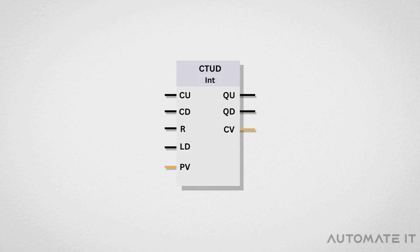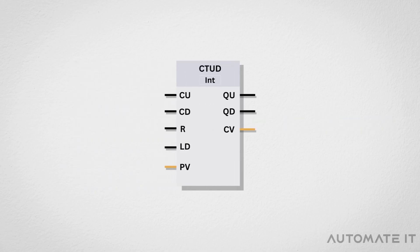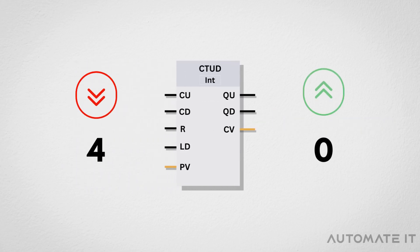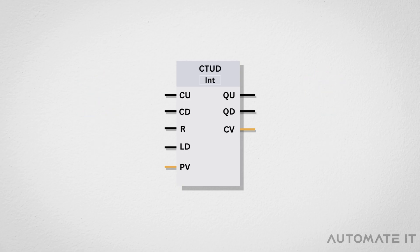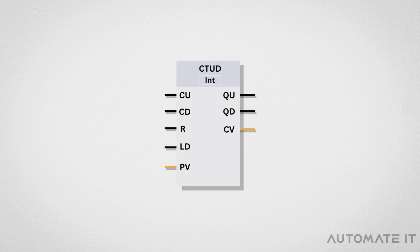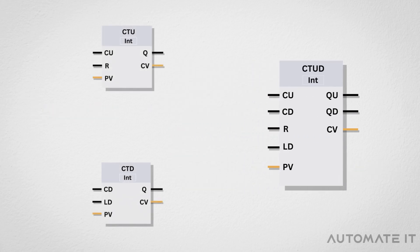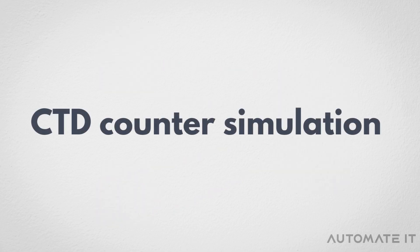Now let's explore the CTUD counter, which stands for Count Up Down. The CTUD counter is designed to increment or decrement its value based on specific input. The CTUD counter has 5 inputs and 3 outputs, which are a combination of the inputs and outputs of the CTU and CTD counters. To understand how the CTUD counter works, let's move to its simulation.